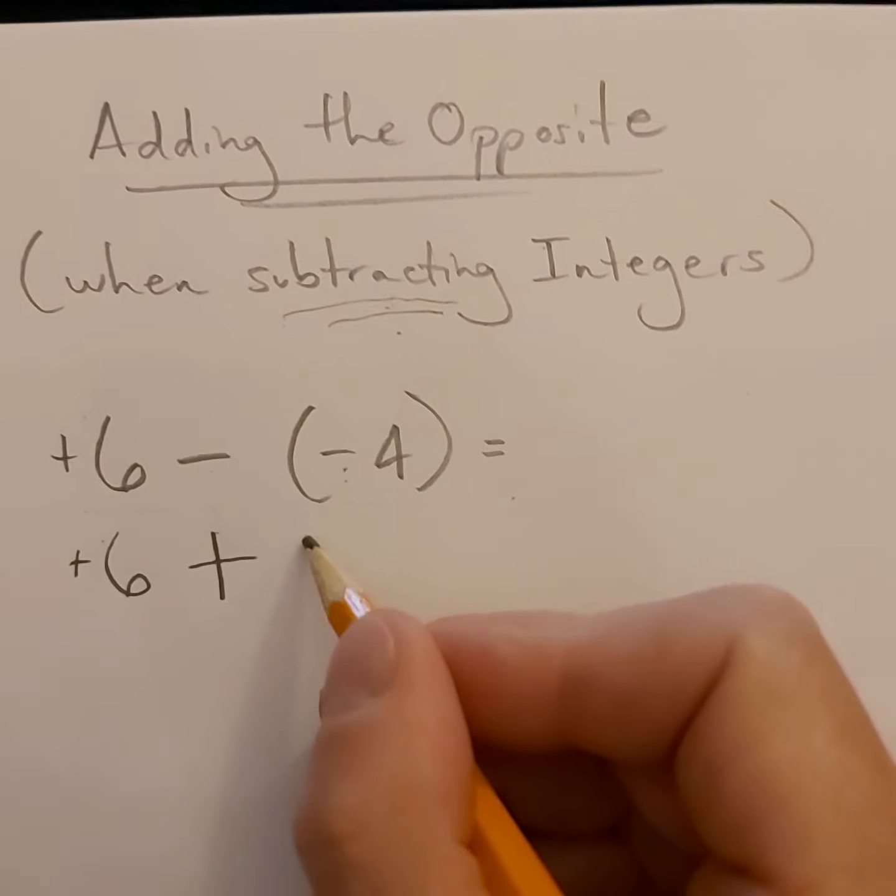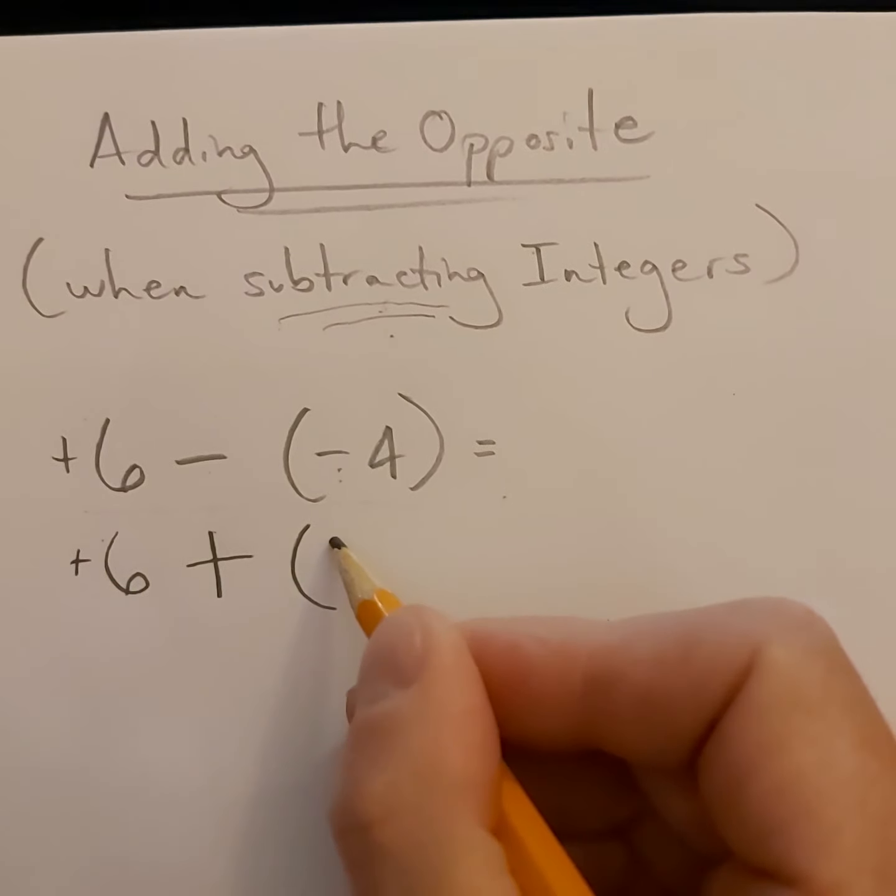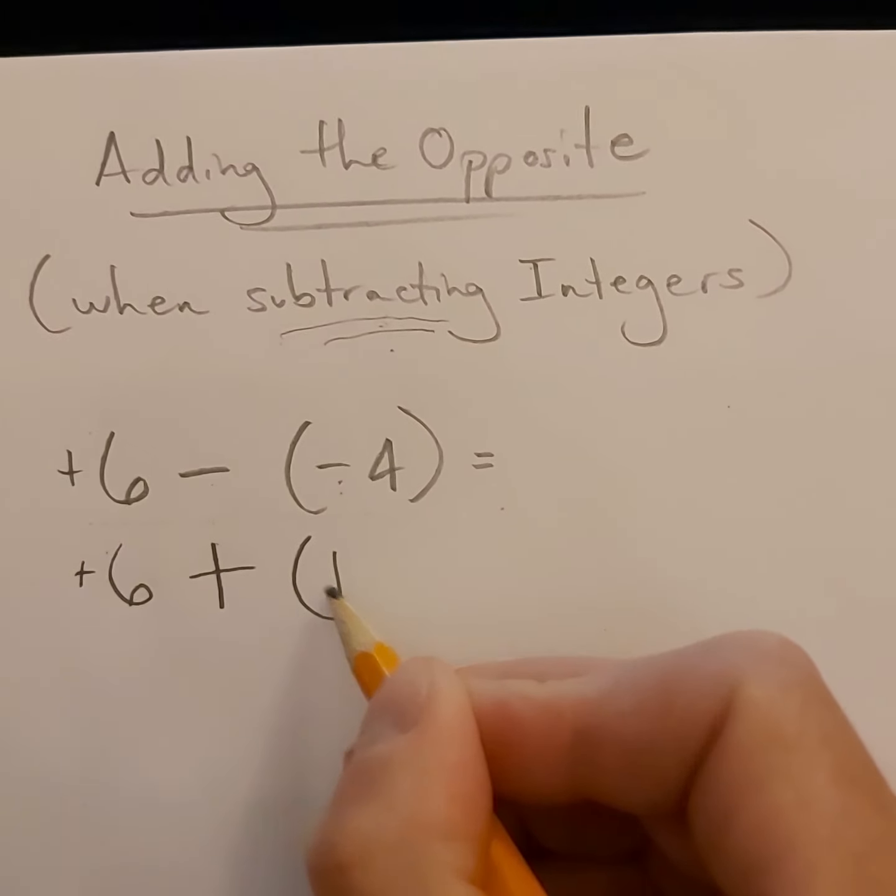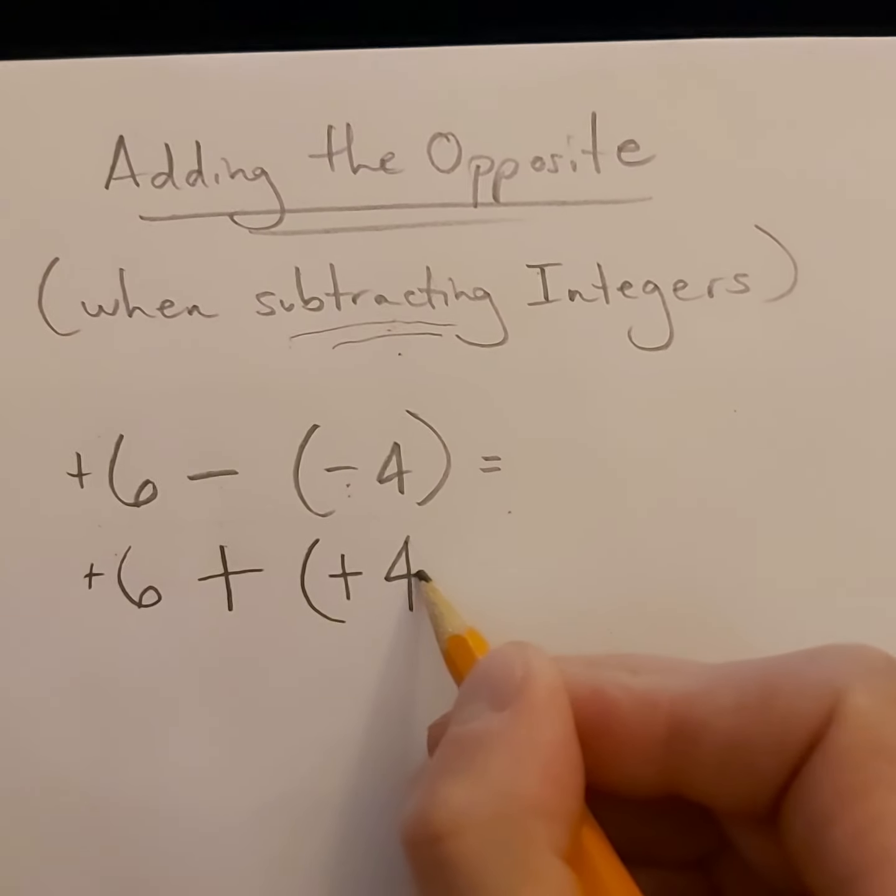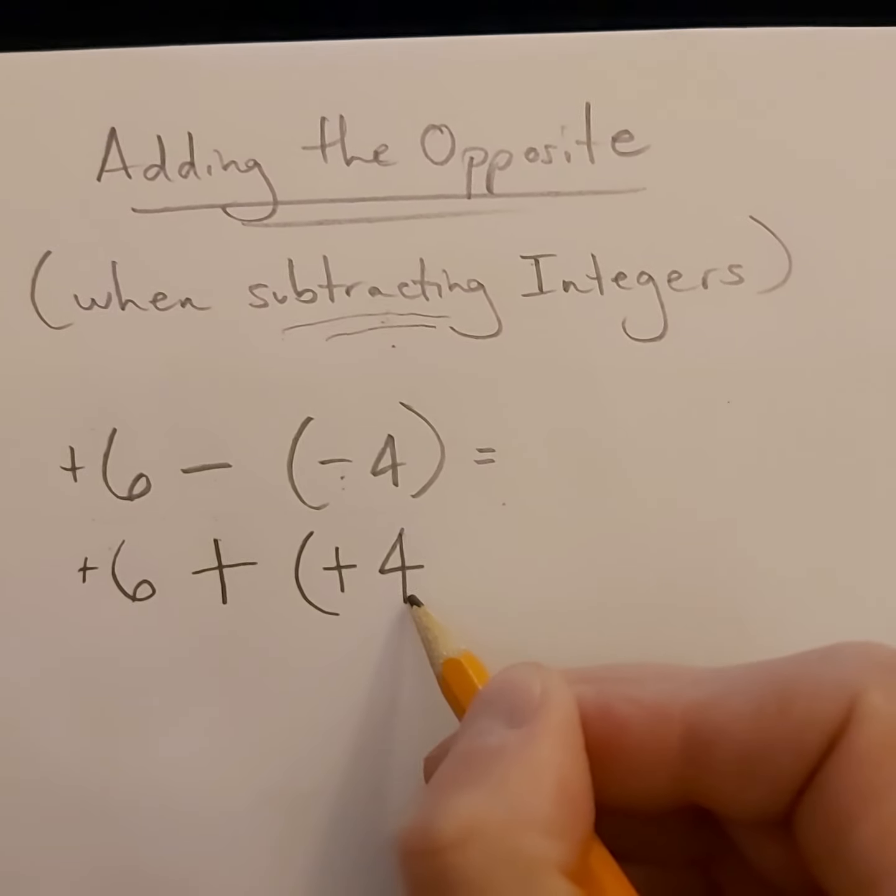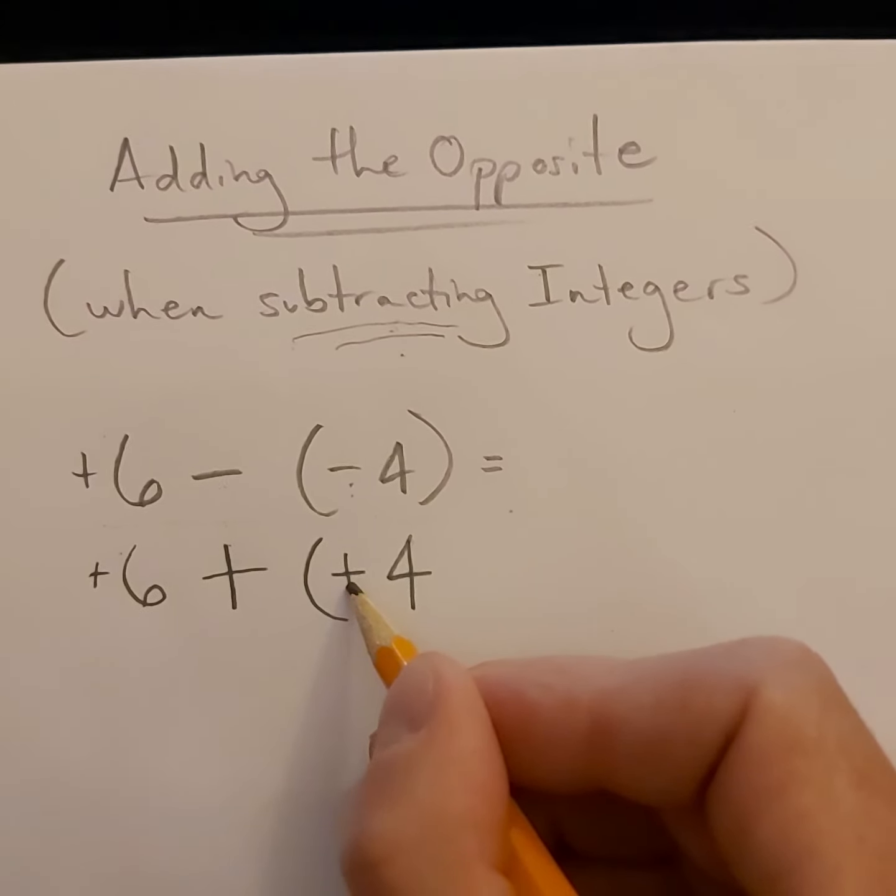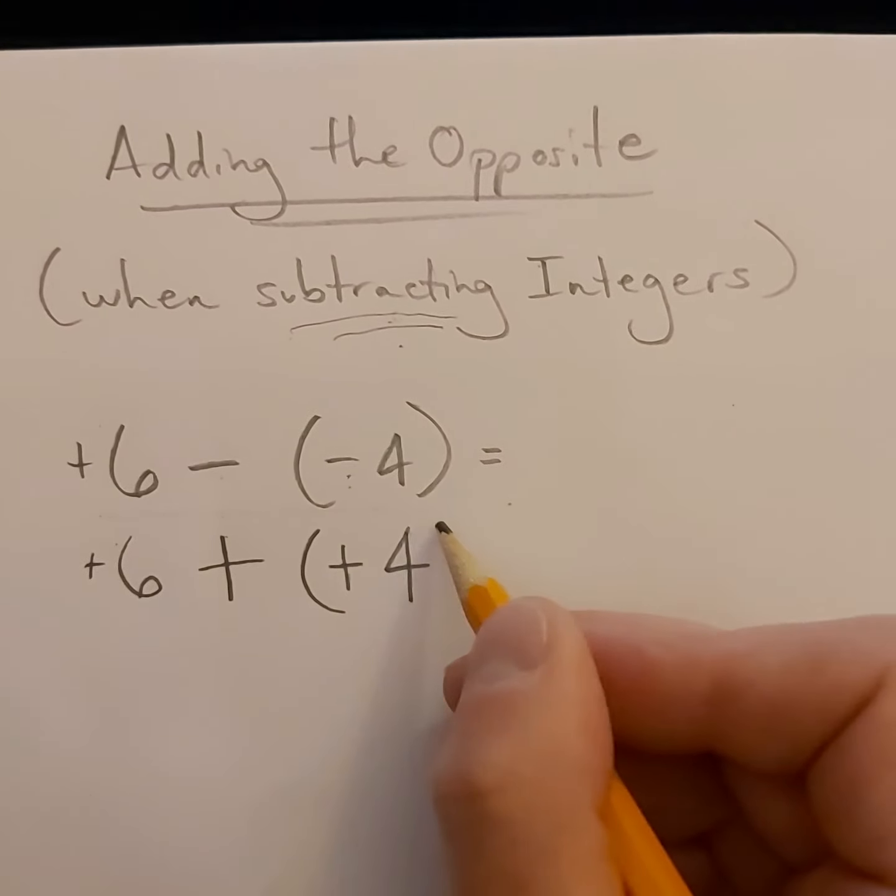Now, negative four is going to change its sign. So when we talk about opposite integers, it means you have the exact same digit, the same number, or the same absolute value of four, but we're changing the sign from a negative to a positive.